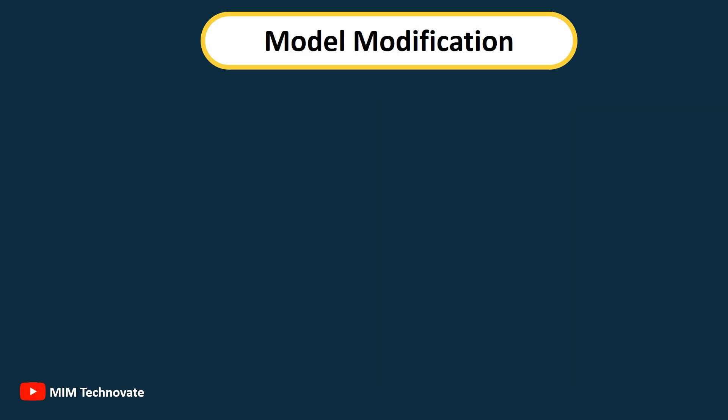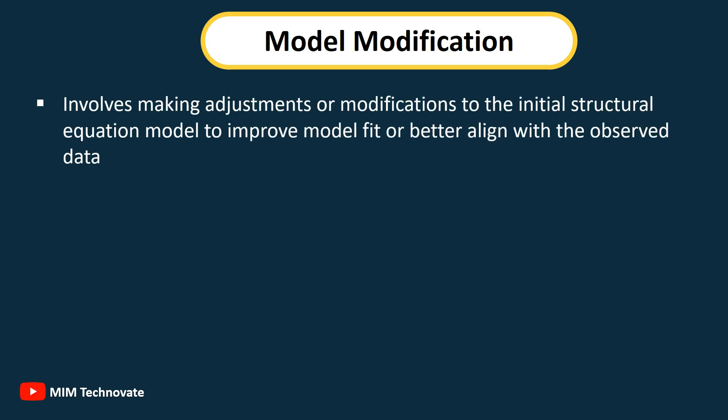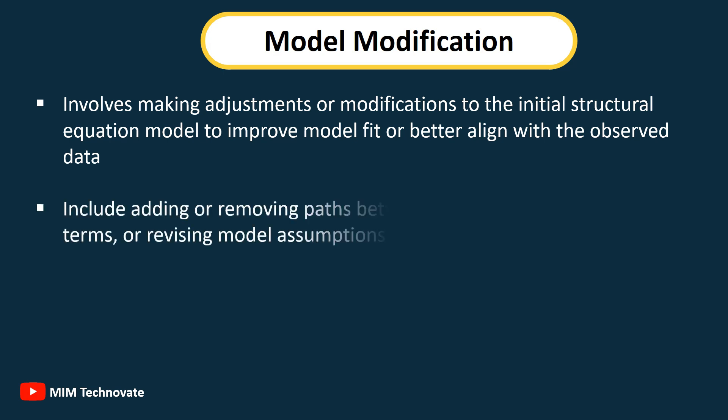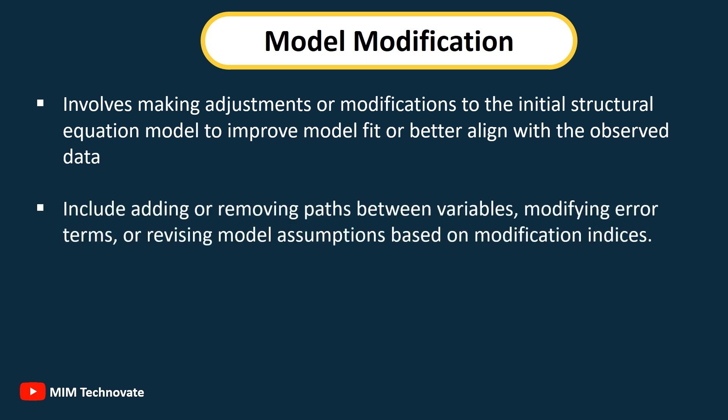Model Modification: Involves making adjustments or modifications to the initial structural equation model to improve model fit or better align with the observed data. This may include adding or removing paths between variables, modifying error terms, or revising model assumptions based on modification indices.